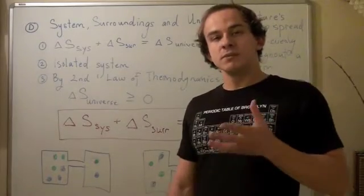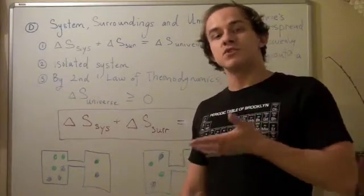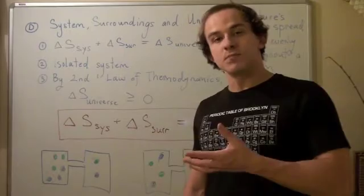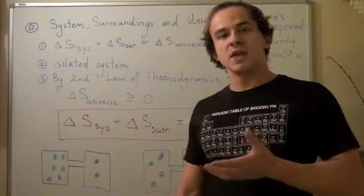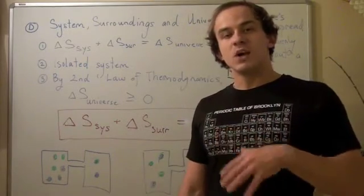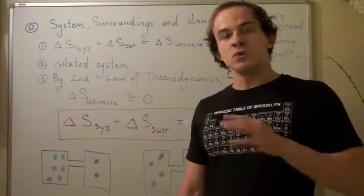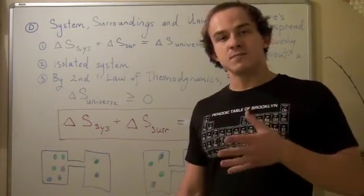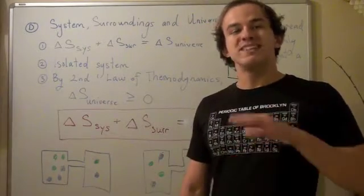When we talk about systems, we simply talk about objects or things of interest, things that we're studying, and everything outside the system is called the surrounding. When we talk about entropy, we represent entropy with the letter S, and changes in entropy with delta S.